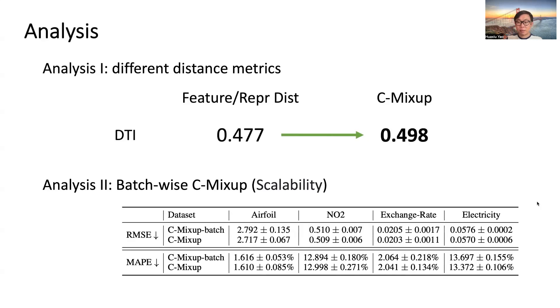Second, we consider the scalability of C-Mixup in billion-level datasets. Here we propose an alternative variant of C-Mixup called batch-wise C-Mixup, where we only apply C-Mixup on every large data batch. According to the results, C-Mixup batch and C-Mixup perform very similarly, indicating that C-Mixup can be applied to large-scale datasets without losing performance.